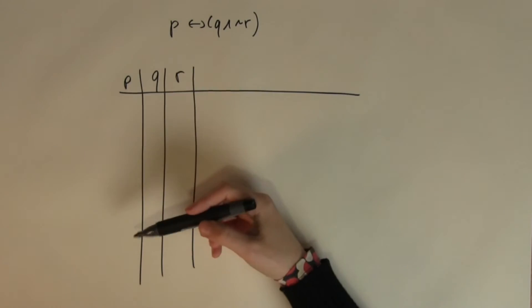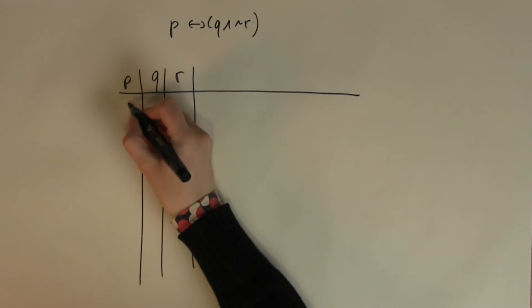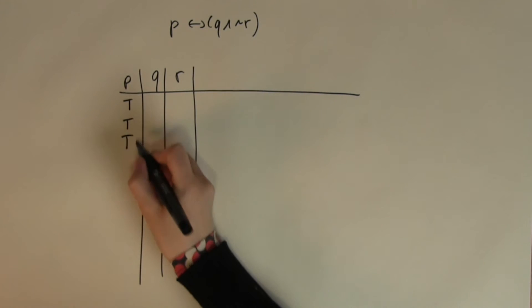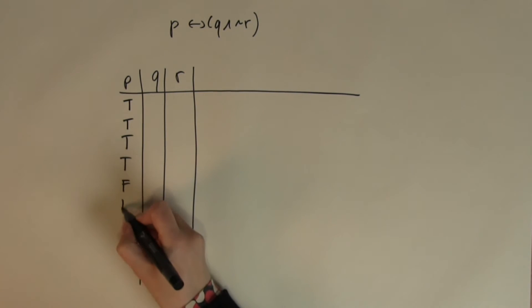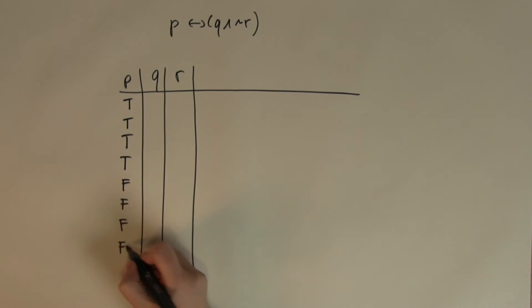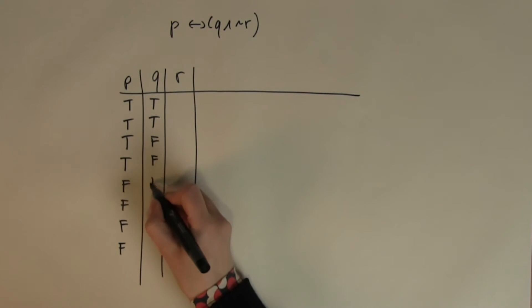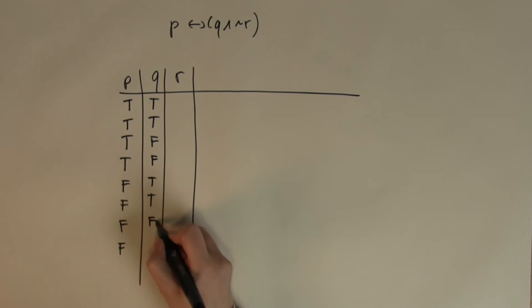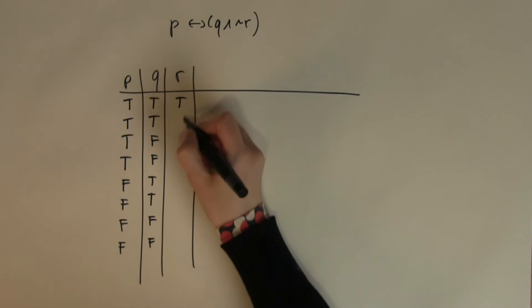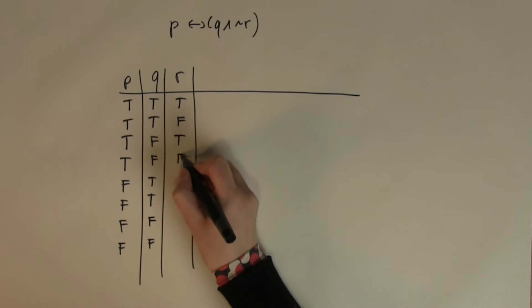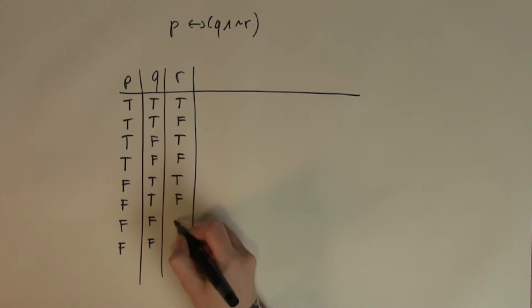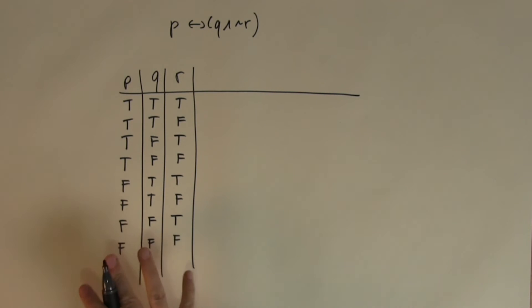So, P, Q, R. 2 to the power of 3 gives me 8. So, to start the truth table off correctly I am going to have to place down 4 trues, 4 falses, 2 trues, 2 falses. And then just alternating them one by one. Right. Setup. Starting setup done correctly.